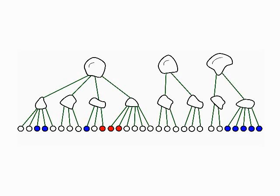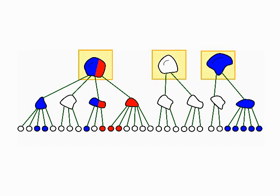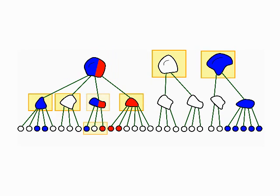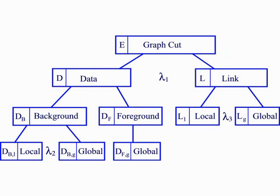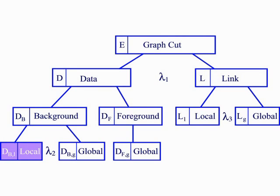Each time we invoke the min-cut optimization, the system propagates paint up the hierarchy. A region may contain a single color of paint, may be mixed, or it may contain no paint at all. The hierarchies then traverse top-down to find the highest-level solid-colored nodes, from which the min-cut graph is built. We introduce a new set of min-cut cost functions, including both global and local data costs and global and local link costs.